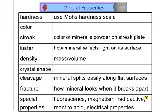Streak is going to be the color of a mineral's powder on a streak plate. The luster is how the mineral reflects light on its surface - does it look metallic, or is it glassy looking? The density is the mass divided by its volume. All minerals usually have crystal shape, however sometimes you can't see it without a microscope. Cleavage is how the mineral splits - does it split easily along flat surfaces, and how many flat surfaces does it have? Fracture is how the mineral looks if it breaks apart instead of cleaving. And what special properties might that mineral have? Does it have fluorescence? Is it magnetic? Is it radioactive? Does it react with acid, or does it have electrical properties?